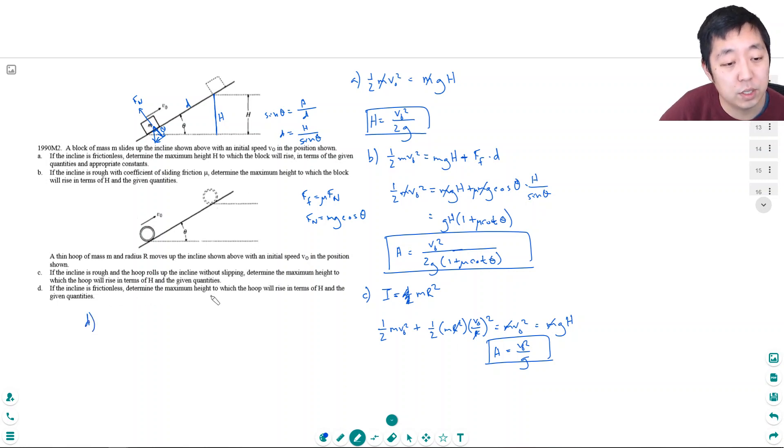If the incline is frictionless, determine the maximum height to which the loop will rise in terms of h in the given quantities. Well, so you see what's going to happen is if it was spinning, we're assuming that it was spinning with this initial velocity. And when it goes up the ramp, the spinning isn't going to slow down. So its energy is one half m v0 squared plus one half m v0 squared, which is what we decided was the rotational energy. When I simplified this, is equal to mgh plus one half m v0 squared. Because it's still going to be spinning up here. See, here we assume no other kinetic energy because it stopped spinning, plus zero.